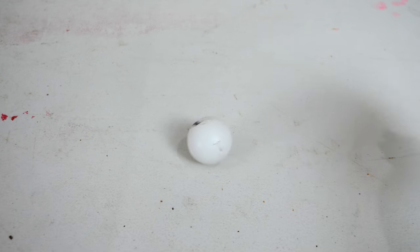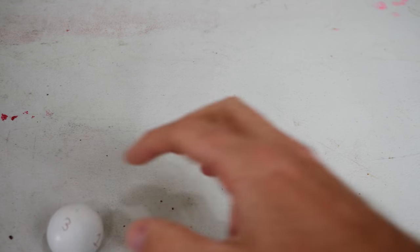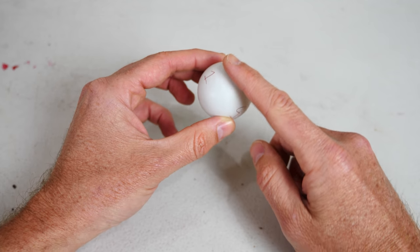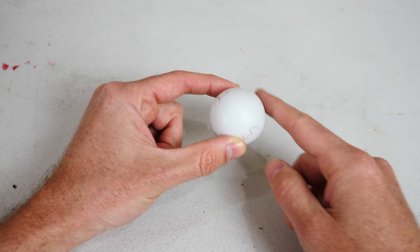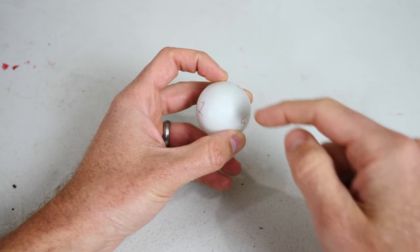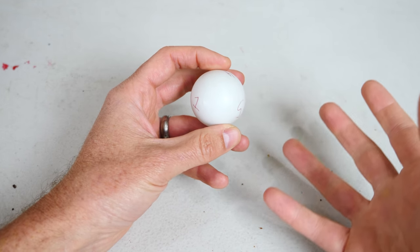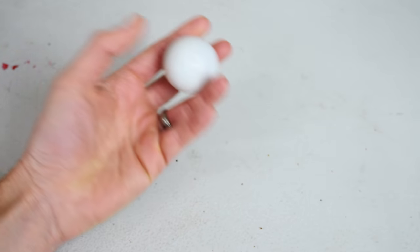So the chances of it actually stopping on a number one through six are pretty slim. That's because on a perfect sphere, the number of equilibrium points are infinite. So if you had infinitely small points on this sphere here, your chance of rolling that point is zero.